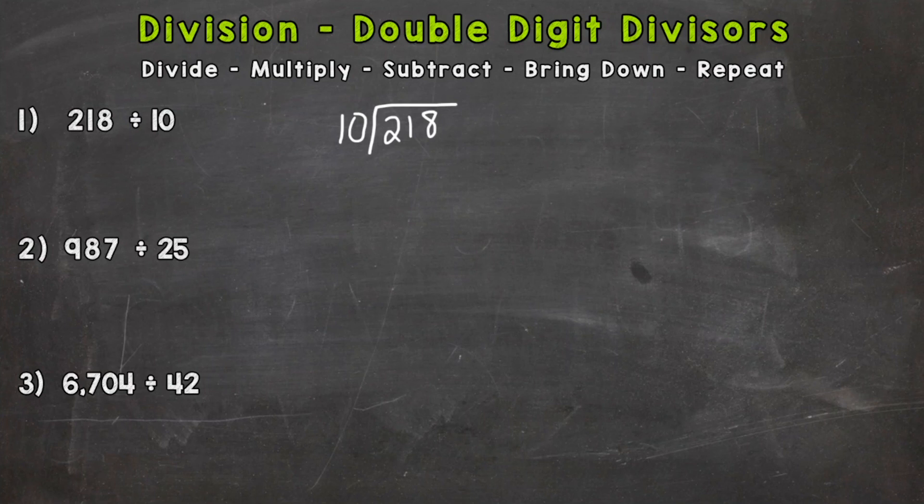So we need to move over to the 1, combine the 2 and the 1 for a 21. So we need to do 21 divided by 10. How many whole groups of 10 are within 21? And the answer to that is 2. So we need to put our 2 above the 21. It matters where you put that 2, everything needs to be lined up, so again it needs to be above the 21.